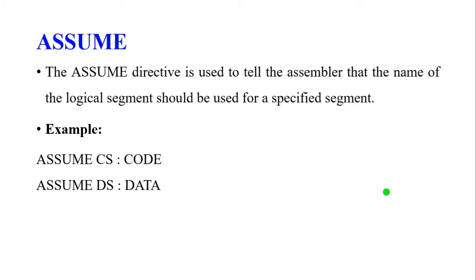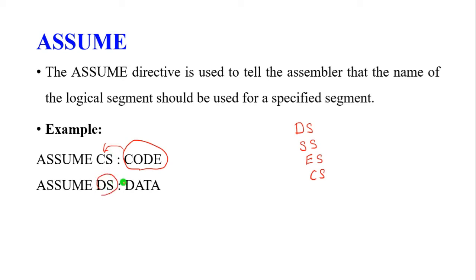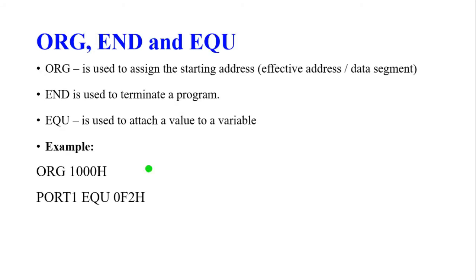The ASSUME directive is used to tell the assembler which logical segment name should be used for each specified segment. The 8086 uses four segments: data segment, stack segment, extra segment, and code segment. For example, 'ASSUME CS:CODE, DS:DATA' tells the assembler that CS refers to the code segment and DS refers to the data segment.